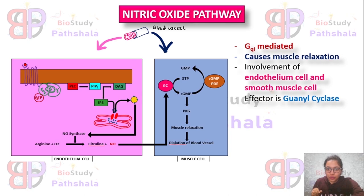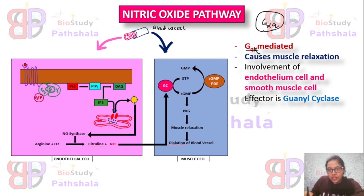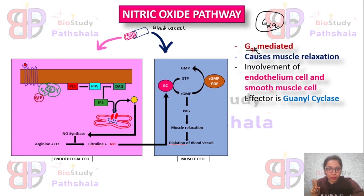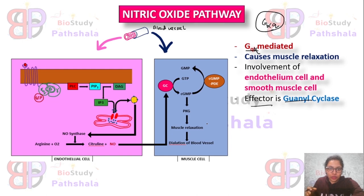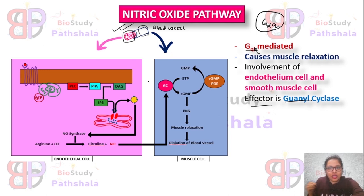Now we will see the NO signaling — nitric oxide signaling pathway. It is a Gq alpha-mediated pathway, meaning the Gq alpha subunit-mediated pathway, and it results in muscle relaxation. This pathway involves two kinds of cells: endothelial cells and smooth muscle cells. Guanylyl cyclase acts as the effector. You can see in the diagram: this portion is the endothelial cell and this portion is the smooth muscle cell within a blood vessel.